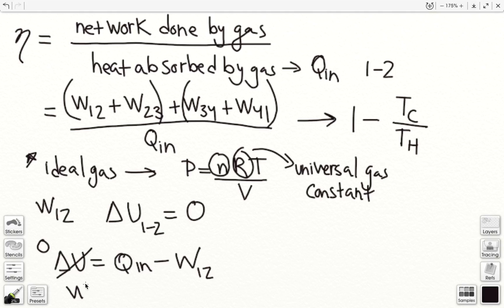Now in this form 1 to 2, our change in internal energy is 0. And so here, the work done from 1 to 2 is going to be equal to our Q in. So this will come useful later in the derivation.